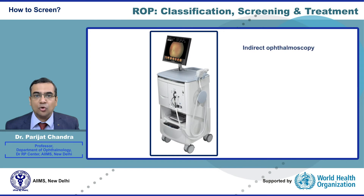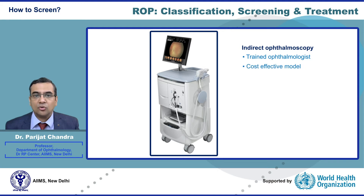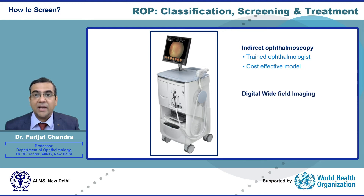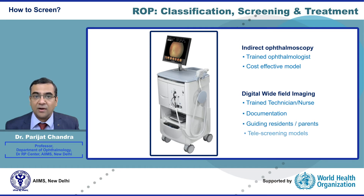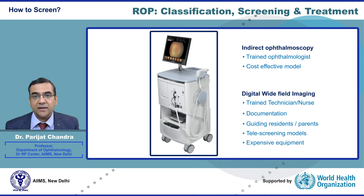Indirect ophthalmoscopy by a trained ophthalmologist is the best way to screen for ROP and is the most cost-effective model. However, digital wide-field imaging has also become popular, as retinal examination can be performed by trained technicians or nurses. It is also useful for documentation, training residents, and guiding parents about their child's disease. It has found wide use in tele-screening models, though the equipment is expensive.